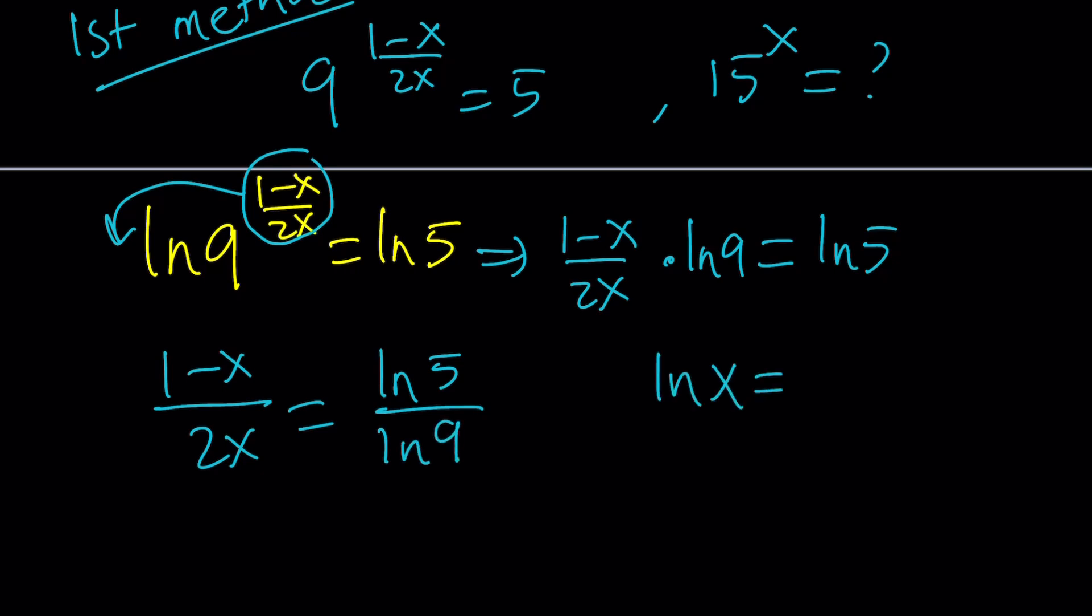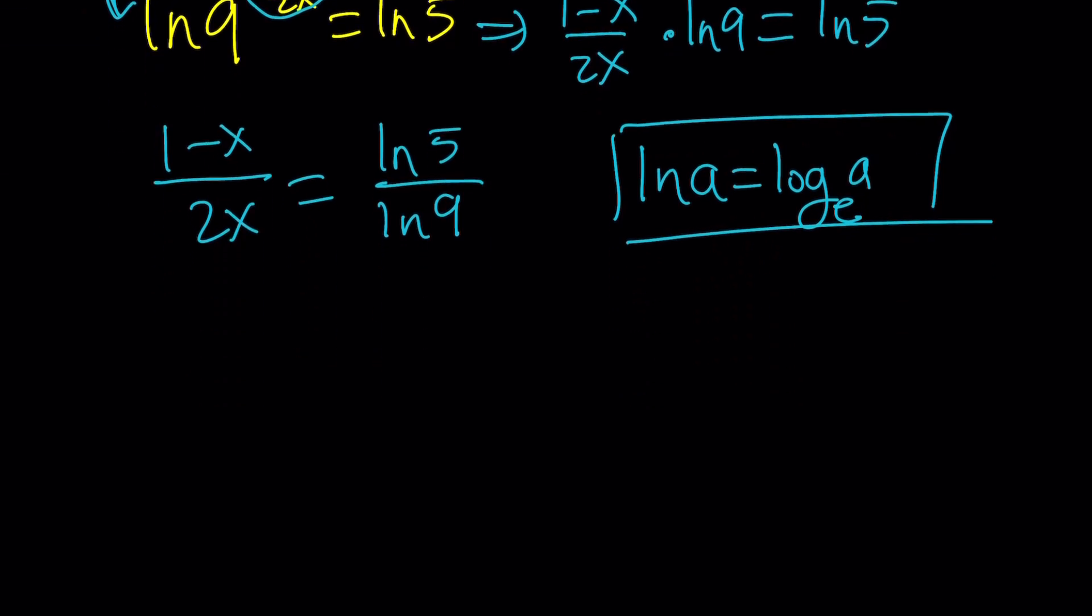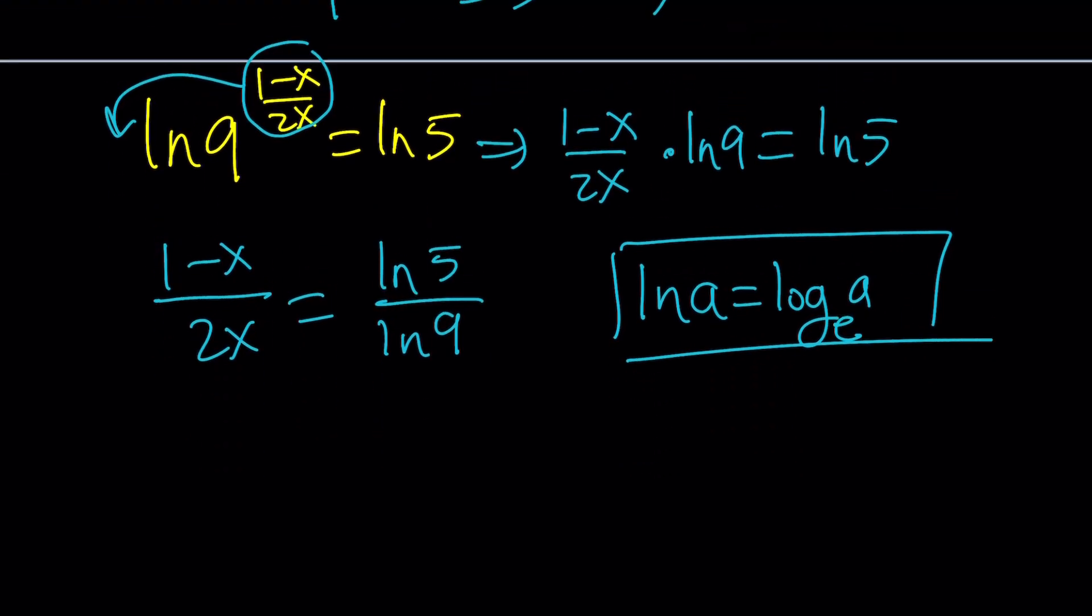ln A is log A with base E. E is Euler's number, which is about 2.7. That's the definition of ln, and now our goal is to solve for x.